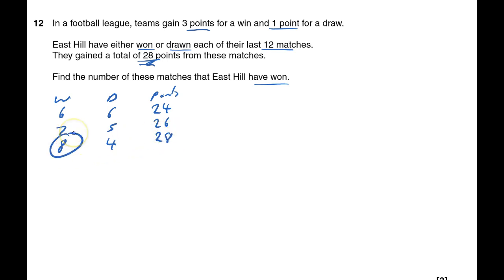Of course, what you could have done is said you could have had w equals number of wins and you could have had d equals number of draws. This may be the more standard approach. So if we have three points for a win, I'll have my number of wins times it by three.